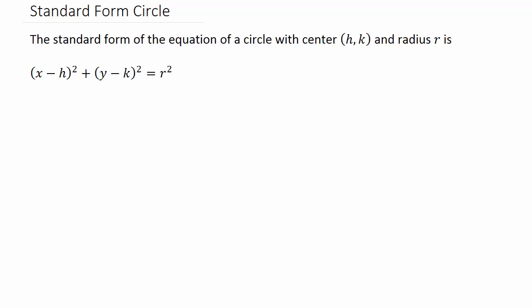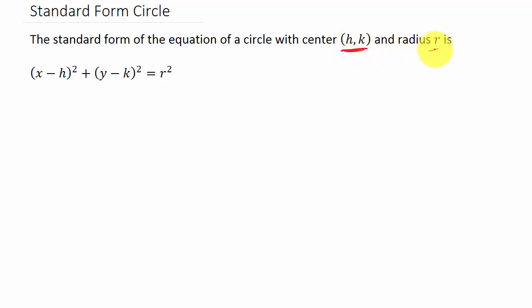In this video we're going to look at writing the equation of a circle given the center and radius. First, let's look at the standard form for the equation of a circle. The standard form of the equation of a circle with center (h, k) and radius r is: x minus h squared plus y minus k squared equals r squared. In order to write the equation of a circle, we must know the center and we must know the radius.